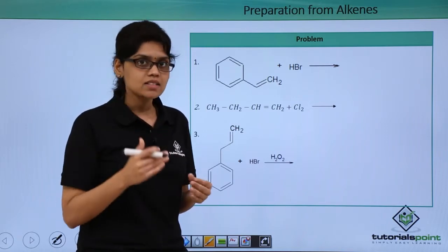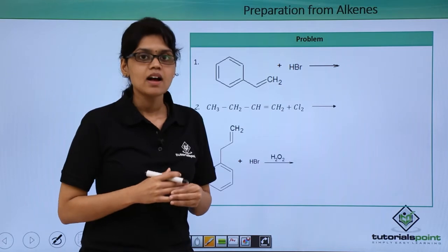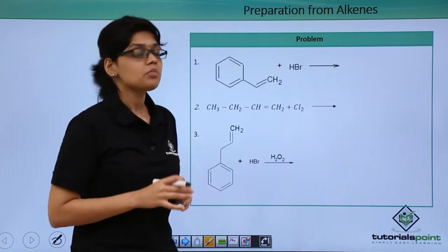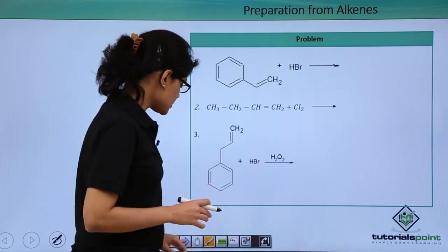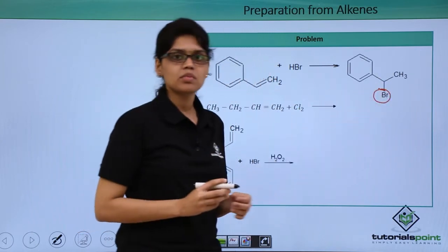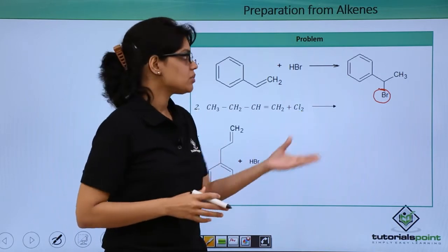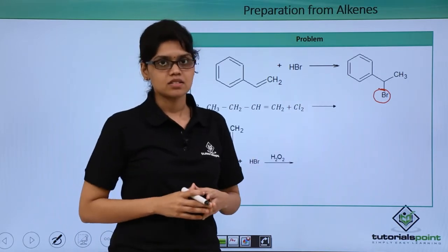In the second step, Br- adds to the carbocation to give us the final product. Therefore the final product in this particular reaction would look something like this, where we have the bromine attached to carbon with less number of hydrogen atoms according to Markovnikov's rule. So this is the final product obtained in this reaction.